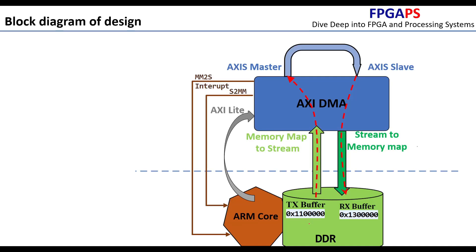The block diagram shows the AXI DMA as the engine that transfers data from the TX buffer at the DDR address to the AXI Stream Master port. It also transfers data from the AXI Stream Slave port to the Rx buffer address in DDR. The AXI Stream Master and Slave ports can be connected to peripherals located in the PL.